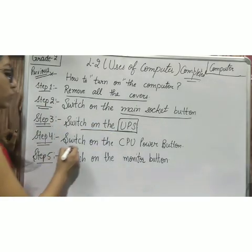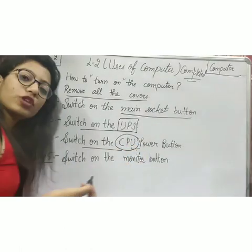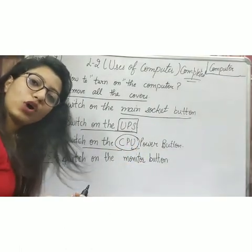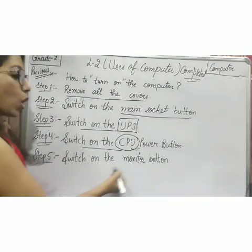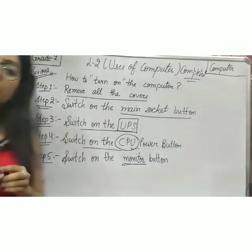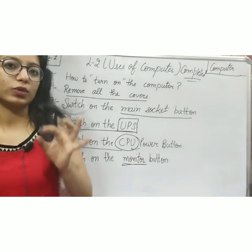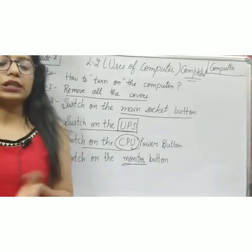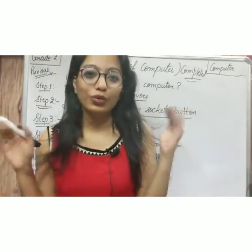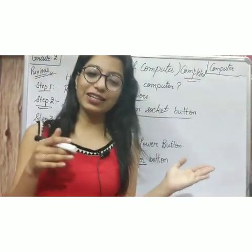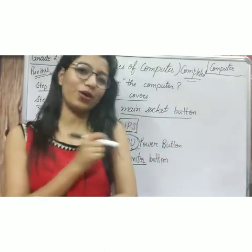Step 4 is switch on the CPU power button. CPU is the central processing unit — that is the brain of the computer. Step 5 is switch on the monitor button. I have shown you the button on the monitor. After these steps it will take some time and your computer will start. Now we are going to do the practical.